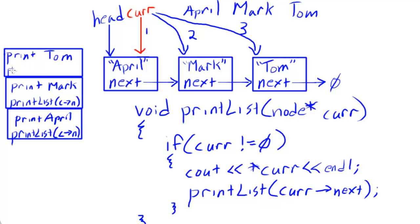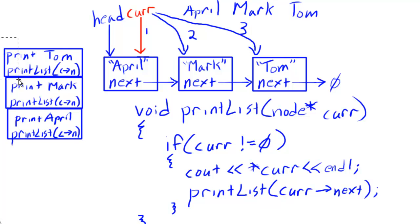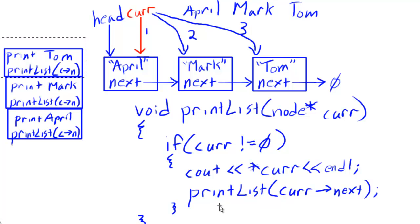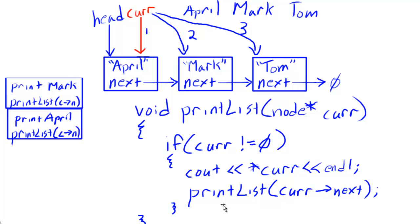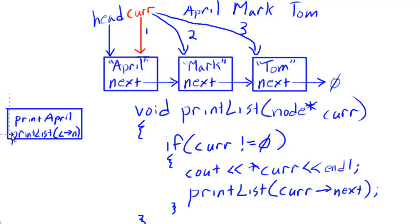Then we make another recursive call passing cur's next, and this time cur's next is null. In that new stack frame, cur is null so the recursive case test fails and we return. We return to the previous stack frame — that frame has nothing left to do since the recursive call was the last statement — so it also returns. We keep popping frames off the stack until all frames are gone.